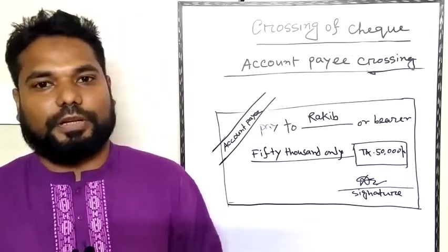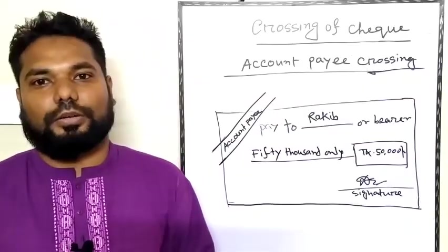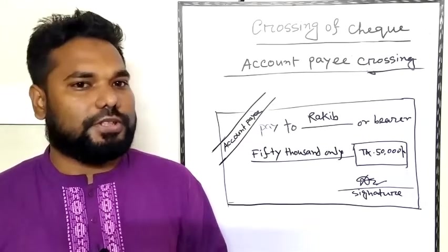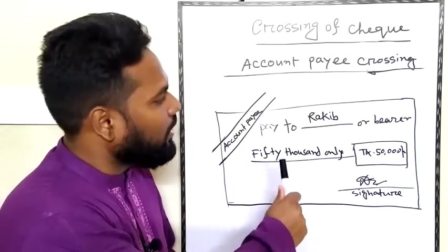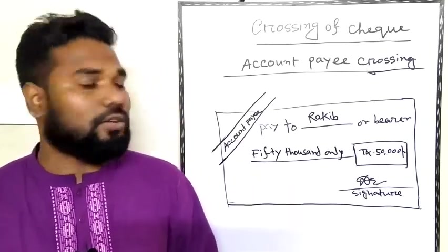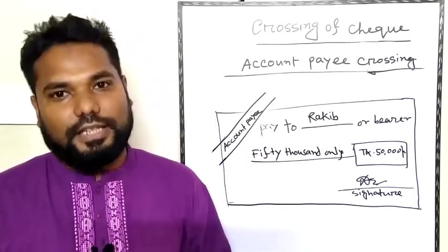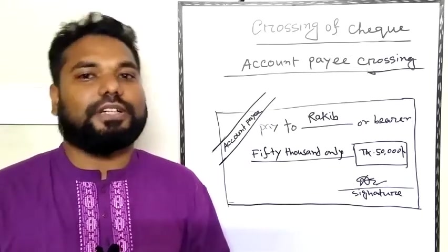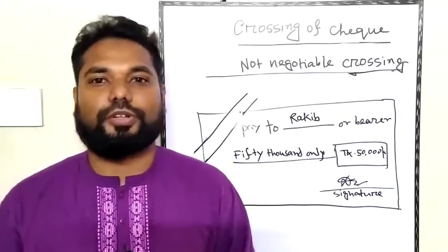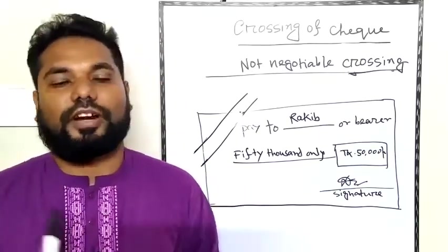In restrictive crossing, the accounting process limits further transfers. The check payment can be transferred to the account according to account payee rules. This prevents further endorsements and further negotiations.